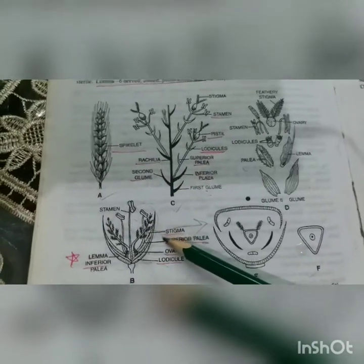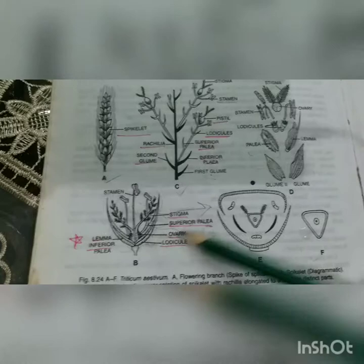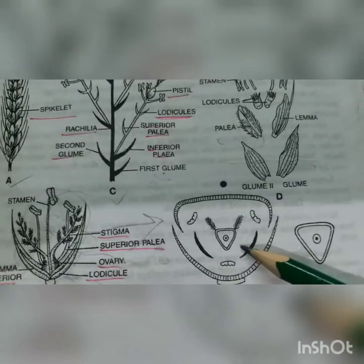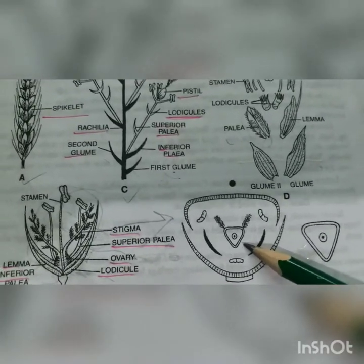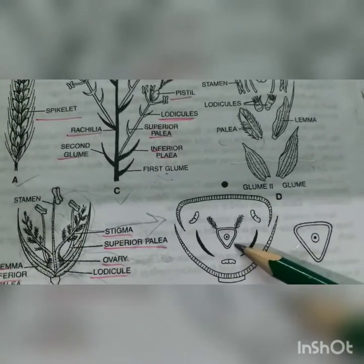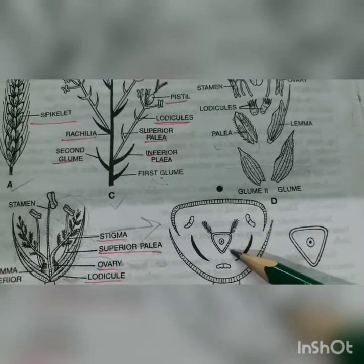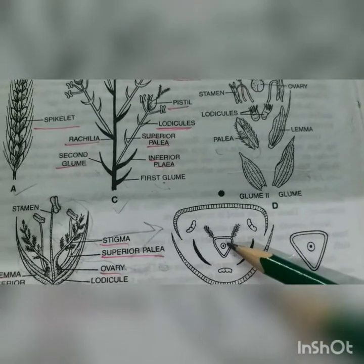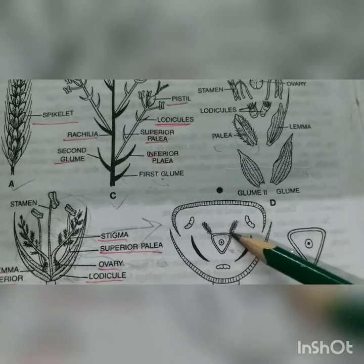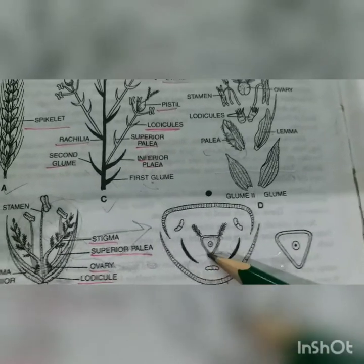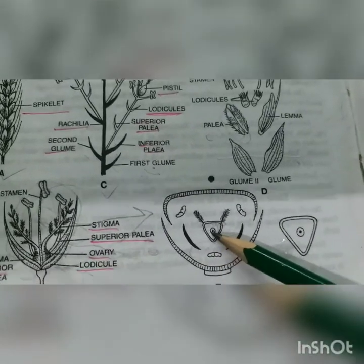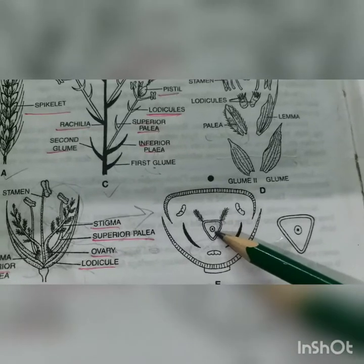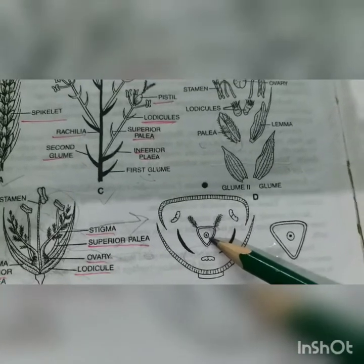Now we are coming to the last part, which is the gynoecium. The gynoecium is monocarpellary with a superior ovary due to the hypogynous condition. It is triangular in outline, unilocular, with one ovule and basal placentation.